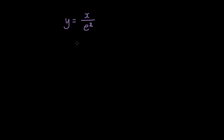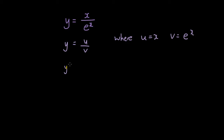So how do we differentiate this? Well, if you guys remember when we have a fraction in the form of y equals u divided by v, where u is equal to x and v is equal to e to the power of x, what we can do is simply use the quotient rule. The quotient rule states that when we want to differentiate this fraction, the answer is equal to v — the denominator — times u', minus u times v', divided by v squared. So that is the formula.